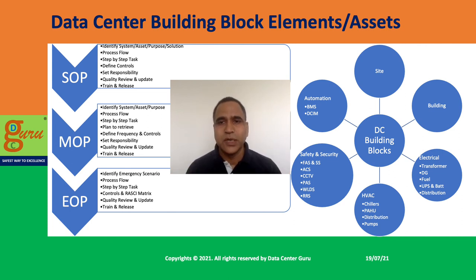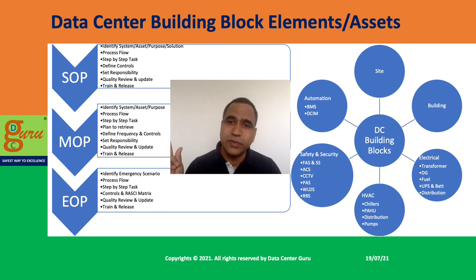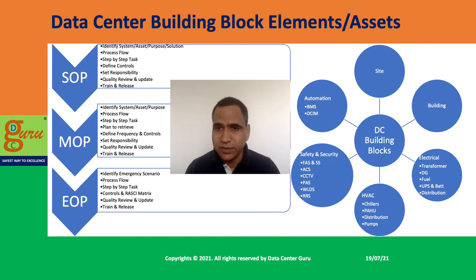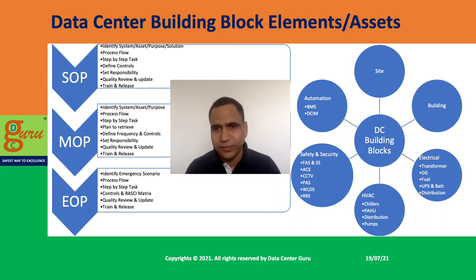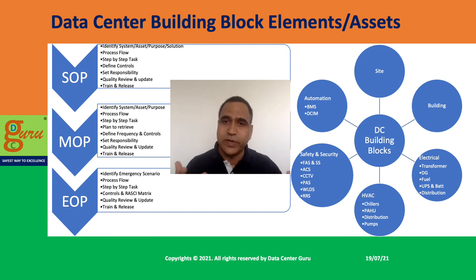If your entire data center operational sustainability program becomes process-driven, you can eliminate 74% of human error. You can eliminate people dependency, skill dependency, and individual dependency. Most importantly, if you have well-defined processes and procedures, it becomes very easy to automate — you can automate and run the show. When we talk about automation we are talking about software-defined data centers, where we are still struggling with DCIM itself — so this is something which will help you in the long run.